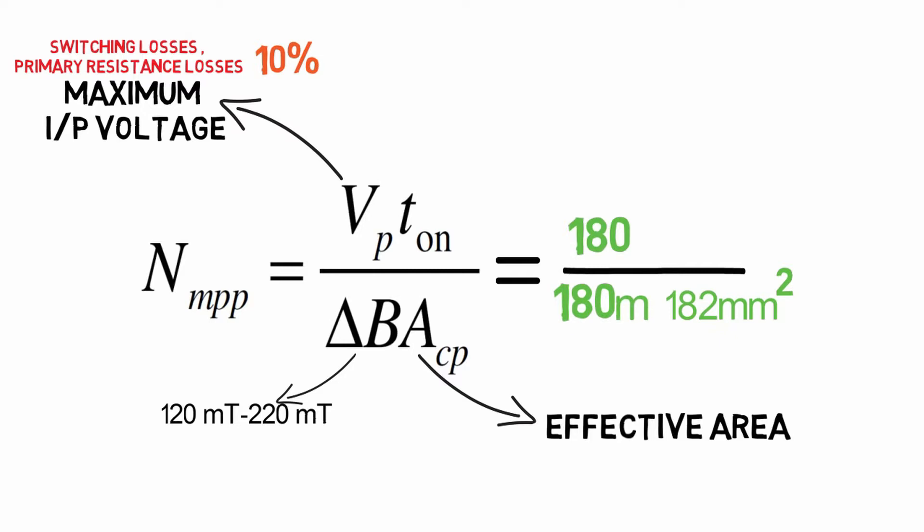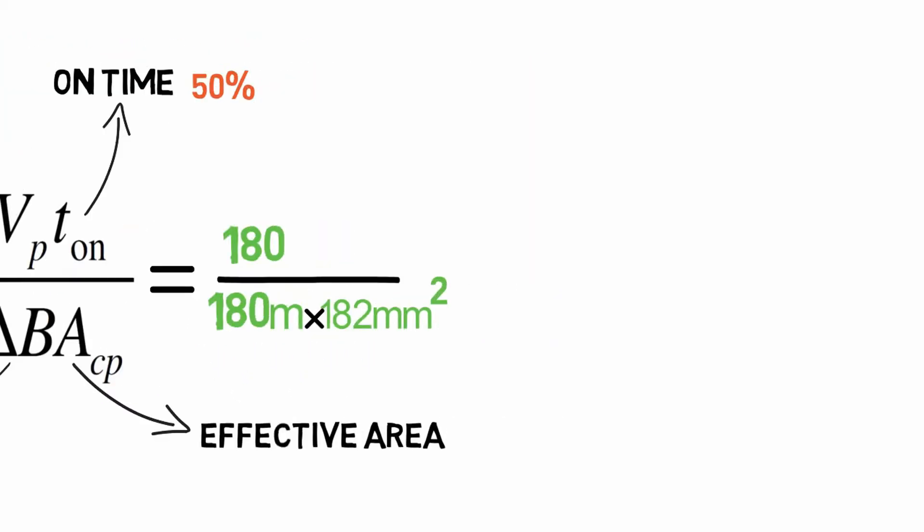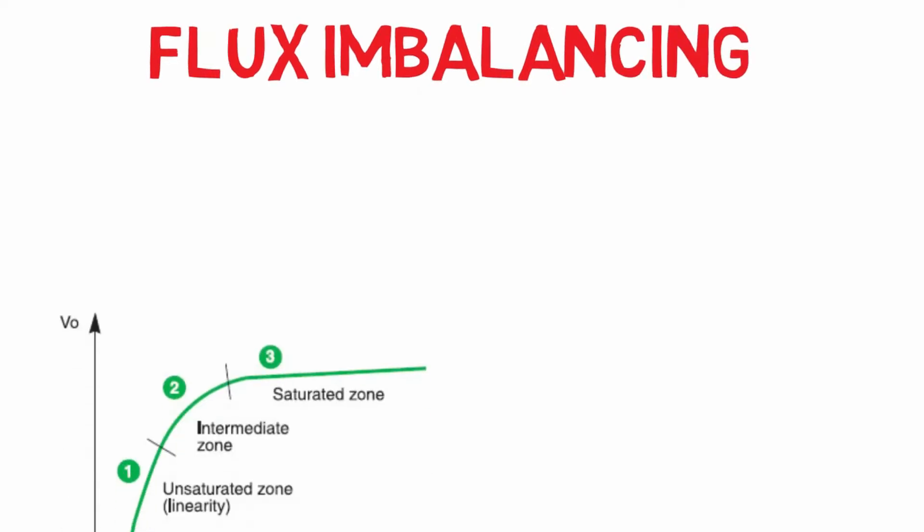Ton is on-time of the transistor. Ideally for one transistor, Ton will be 50 percent of total time and we cannot increase on-time of the transistor more than that because if we do so, problems like flux imbalancing will arise. In simpler words, increment of on-time will lead to saturation of the core and it will destroy the transistor.